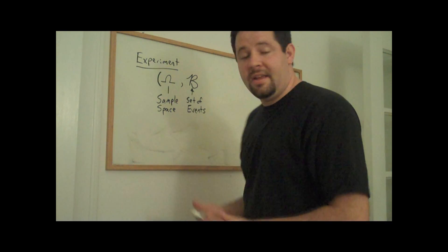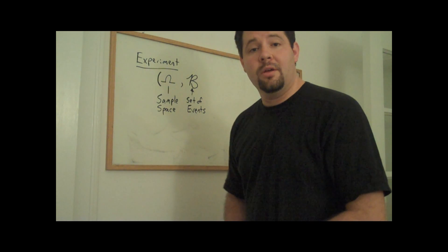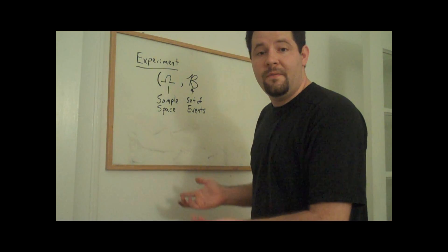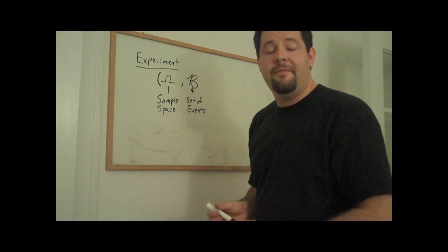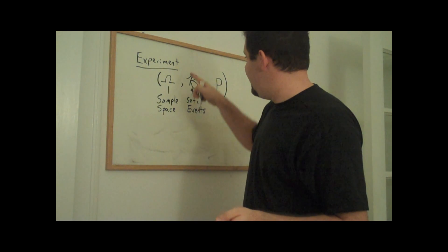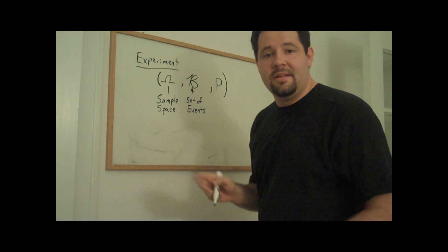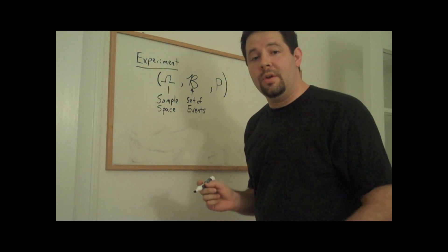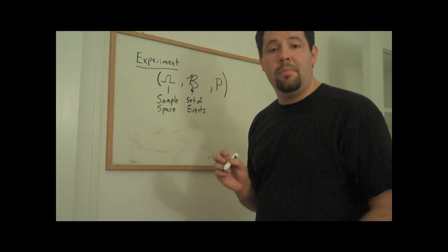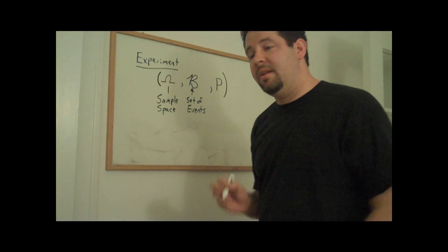Each event is really just a set of possible outcomes in the sample space, but we're going to define probabilities for events. This probability is going to take every event in this set of events and assign to it a number between 0 and 1. And it's going to be called a probability if it satisfies three conditions.